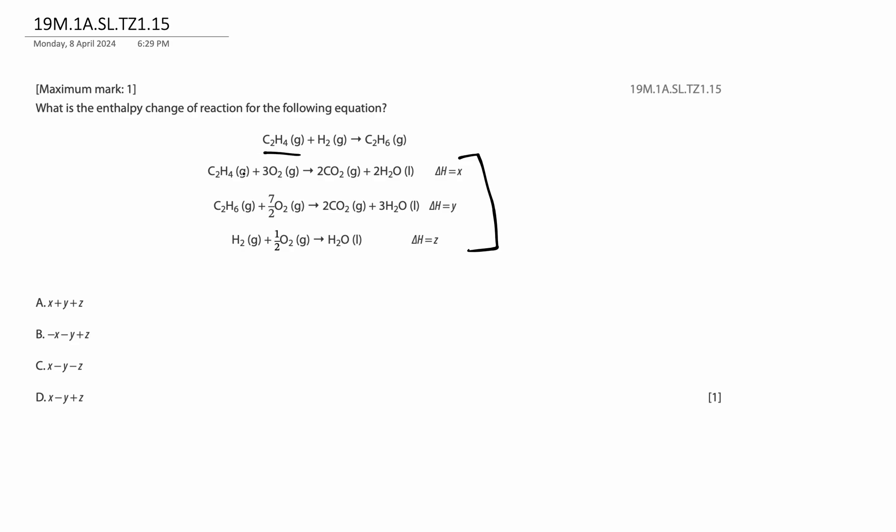Firstly, I need C2H4 on the reactant side. Now, which equation has C2H4 in 1, 2, and 3? This is 1. This is 2. This is 3. Equation 1 has C2H4 on the reactant side already. So I don't need to do anything about this. Immediately, I know the enthalpy change of formation is equal to the first part, x, positive. That's the first part of this.